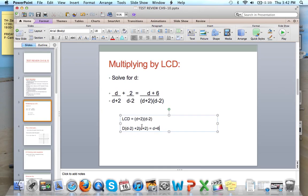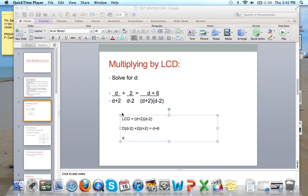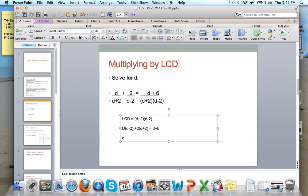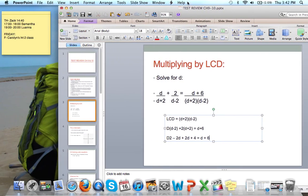So now we're going to distribute, combine like terms. So d times d is d squared. So right here we're going to put in d squared. So let's just call that d squared minus 2d. Over here we have plus 2d plus 4 equals d plus 6. So again, all we did there was just distribute this right here.